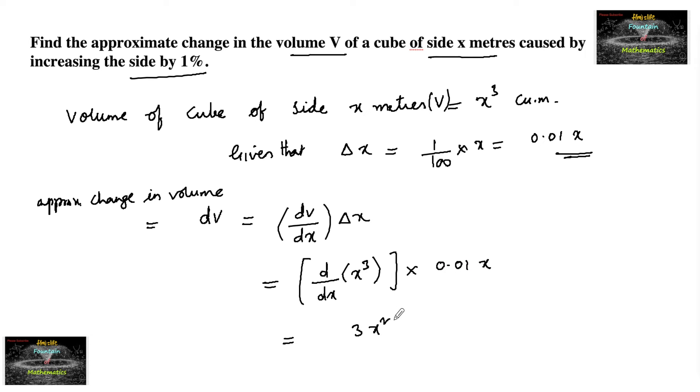So this is 3x² times 0.01x, or we can write 0.03x³. 0.01 times 3 is 0.03x³ cubic meters.